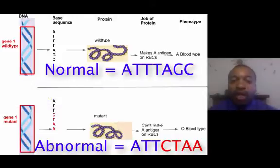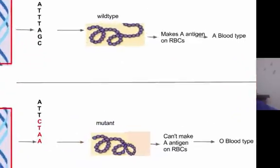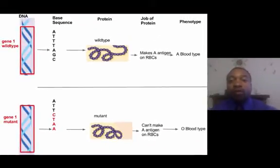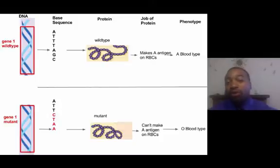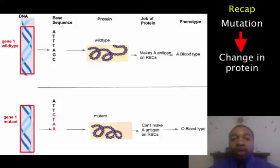You've probably deduced that the base sequence of DNA produces a different protein. The wild-type sequence differs from the mutant sequence, producing a different protein. The wild-type protein makes the A antigen on red blood cells, giving a phenotype of blood type A. A different sequence might make a similar but non-functional protein, meaning no antigens on red blood cells — resulting in blood type O. Mutations affect our phenotypes because a difference in base sequence makes a different protein, which may not do its job correctly, leading to a different phenotype.